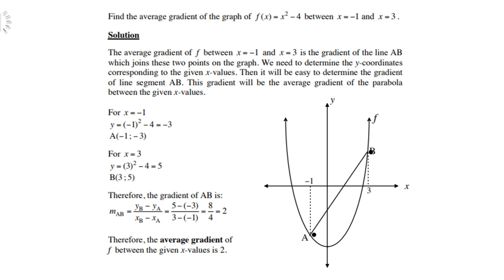Then it will be easy to determine the gradient of the line segment AB. This gradient will be the average gradient of the parabola between the given x values. Step one: substitute x = -1 into the function and you get -3. So point A is (-1, -3). Do the same with the other x value, x = 3: substitute and you get 5. So point B is (3, 5).